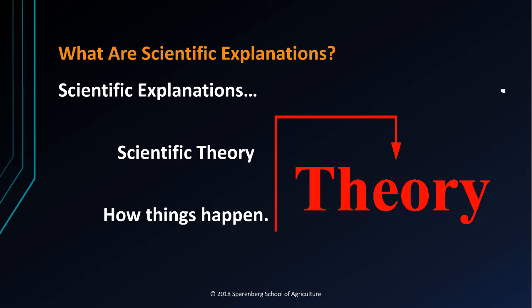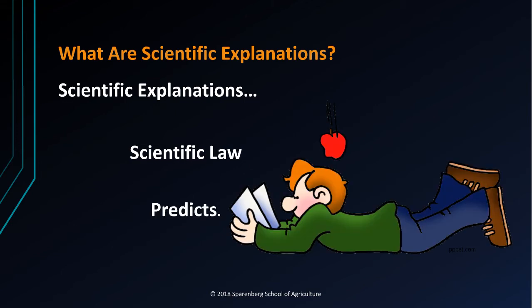Think of theories as a description of how things happen. Scientific law is a descriptive statement or equation that reliably predicts events under certain conditions. Laws describe principles of nature. Laws describe what occurs rather than how it occurs.